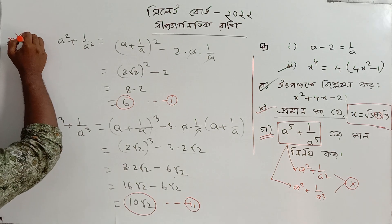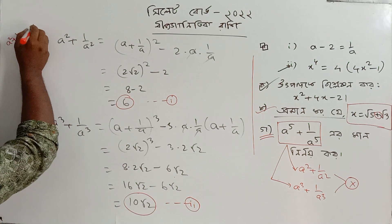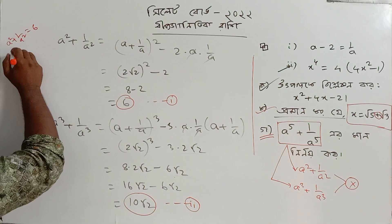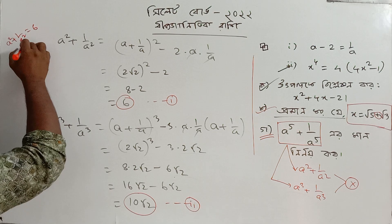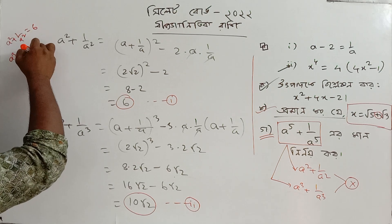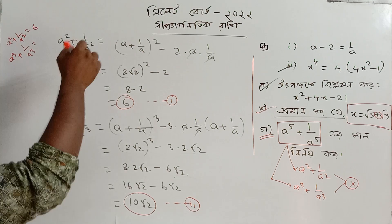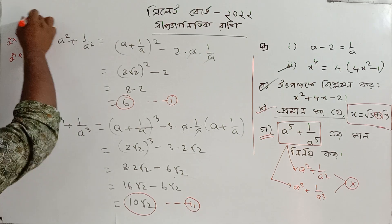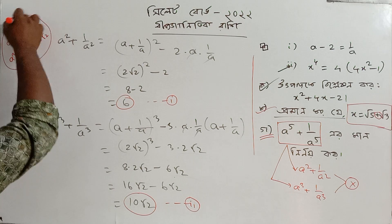A squared plus 1 by A squared equals 6, and A cubed plus 1 by A cubed equals 10√2.